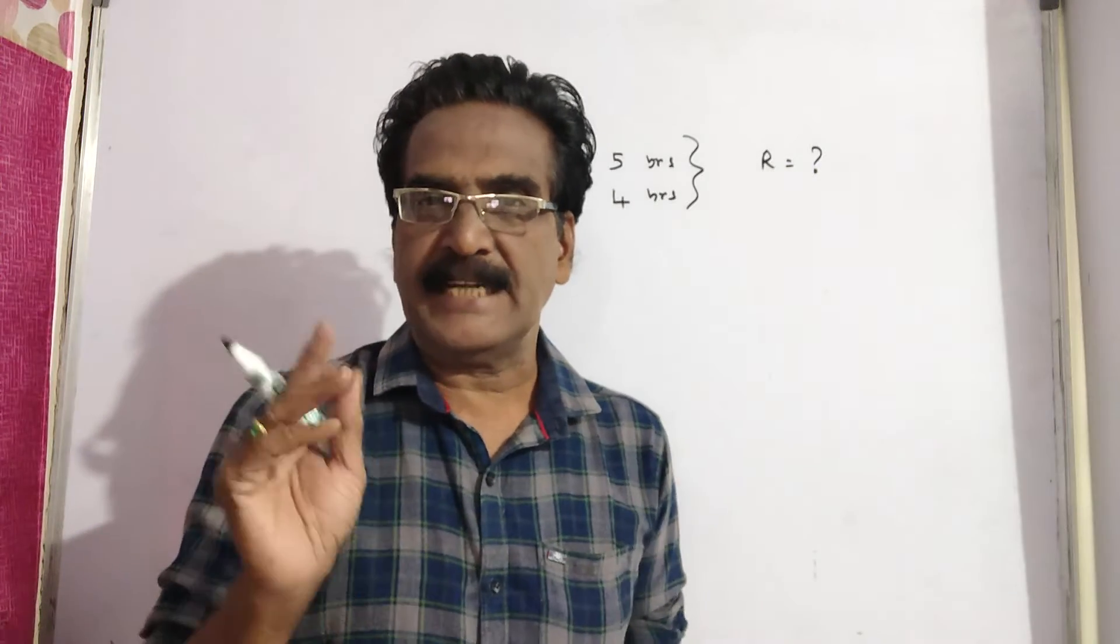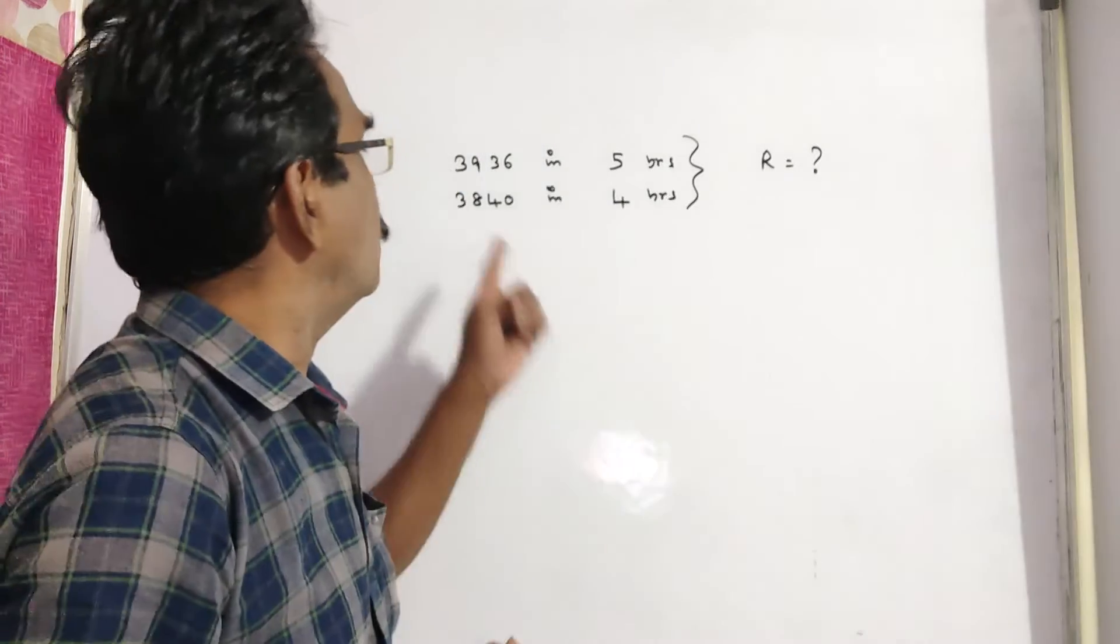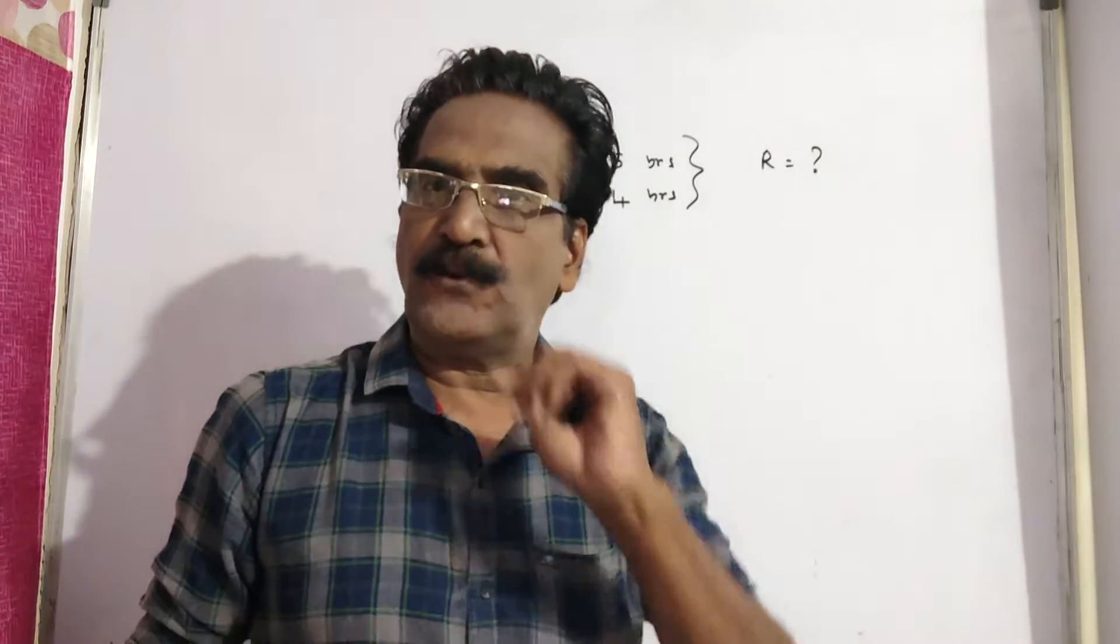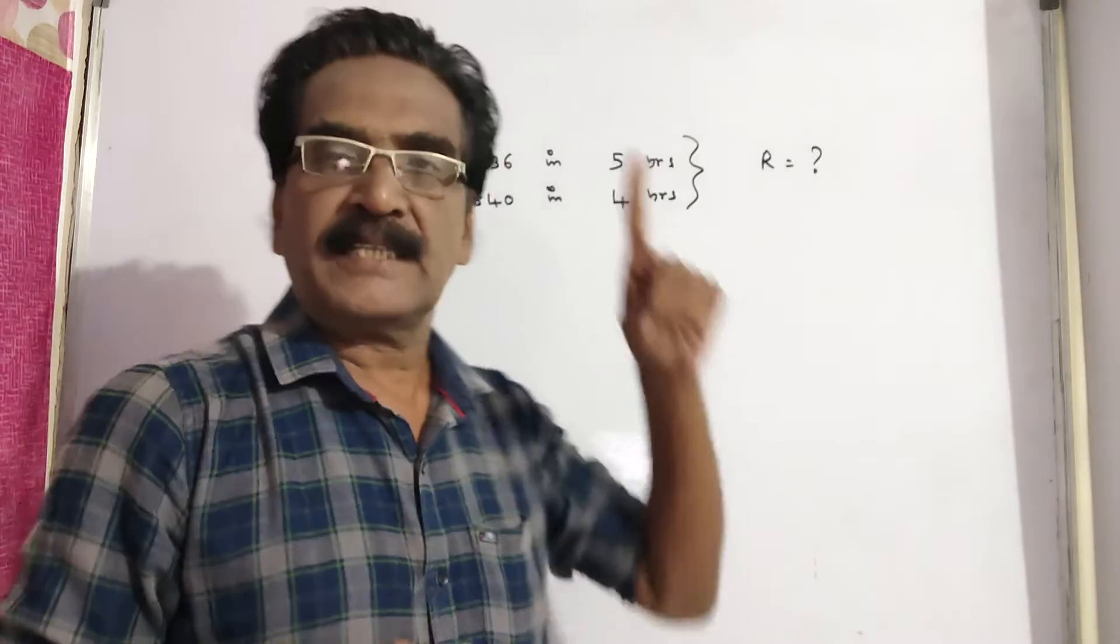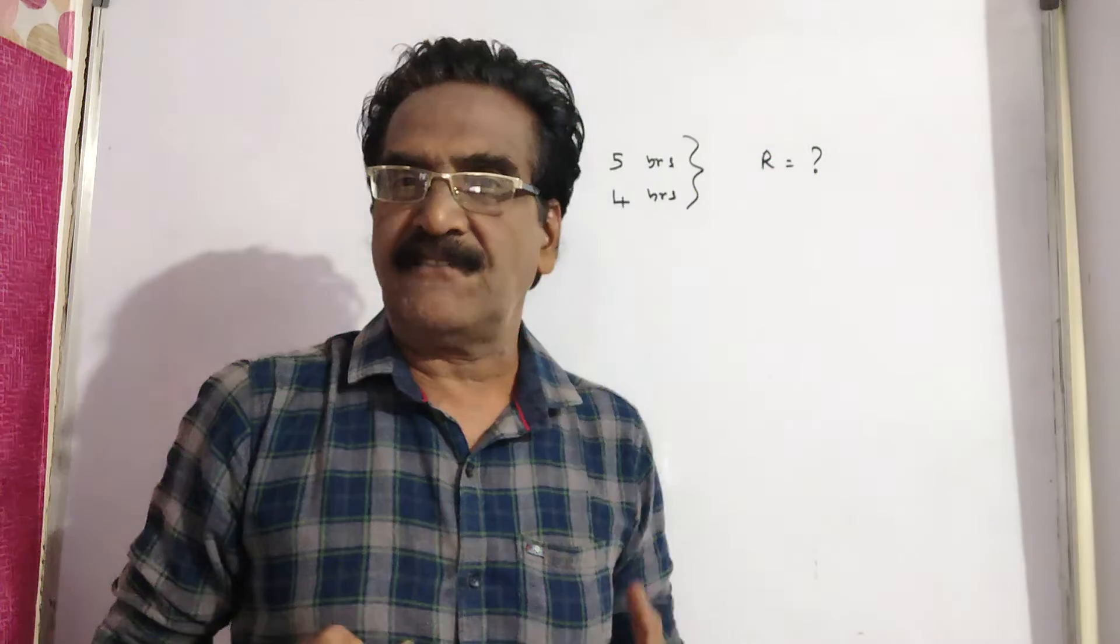Hi friends, good morning. Please look at the next problem in compound interest. See friends, a sum of money amounts to 3840 in 4 years and 3936 in 5 years at compounding rate of interest. What is the rate of interest?